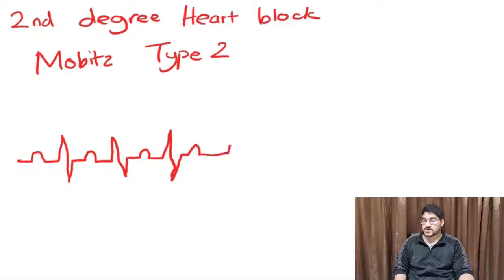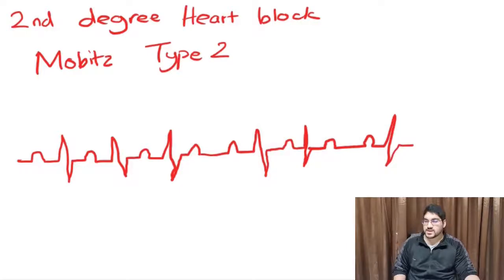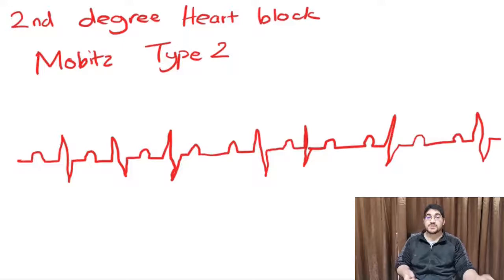But every now and then, there'll be a skipped QRS complex. But the P wave stays constant. I'm not drawing in the ST segments and the T wave just for clarity's sake. You'll see there's no actual predictability to how many beats it's going to be before there's a skipped QRS. In Mobitz type 2, it's unpredictable. You don't know when the cops are going to pull you over. You don't know what you may have done wrong. The PR interval can be long or it can be normal. You don't know. You'll see it on the ECG. Maybe long, maybe normal.